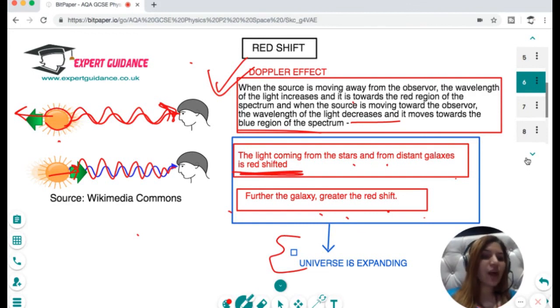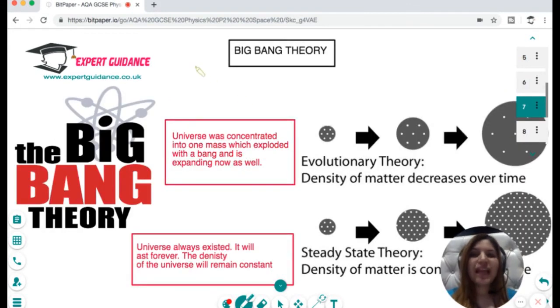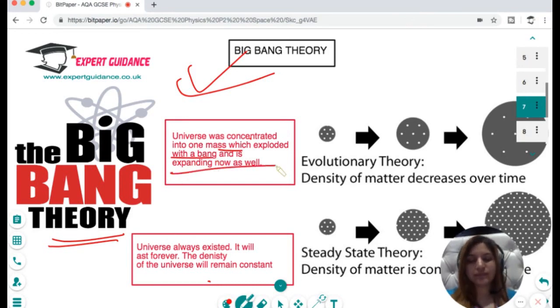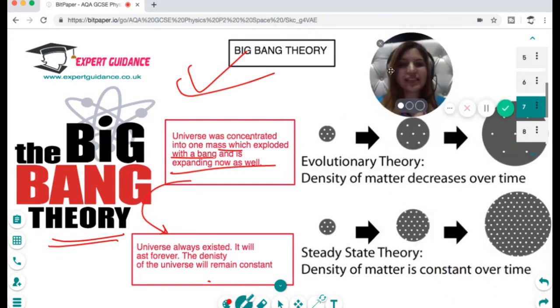Further the galaxy, greater the redshift, which explains that the universe is expanding - that the stars and components are moving away from you. This is what the Big Bang theory says: the universe was concentrated into one mass which exploded with the Big Bang and is expanding now as well. There was another theory, the steady state theory, that says the universe always existed and will last forever and the density of the universe will remain constant.